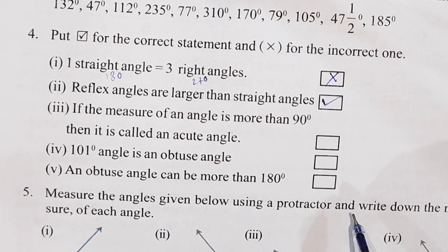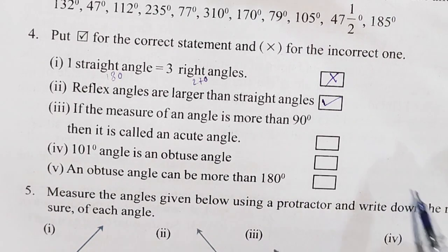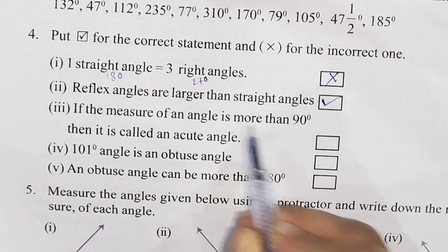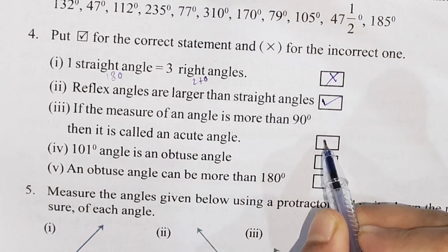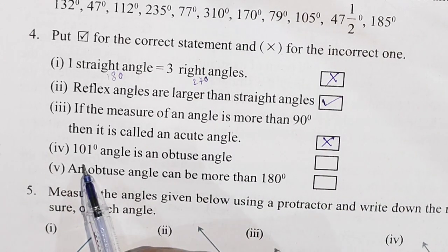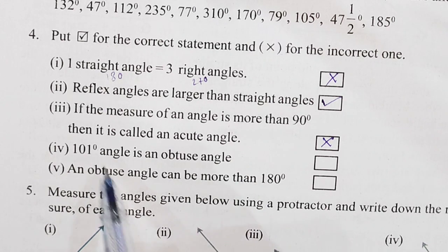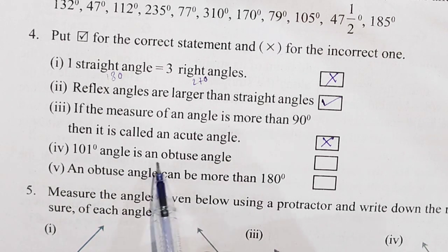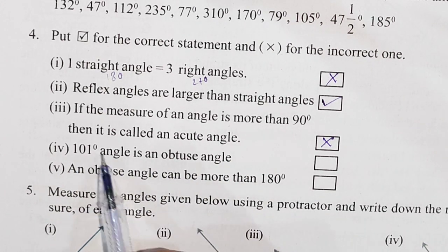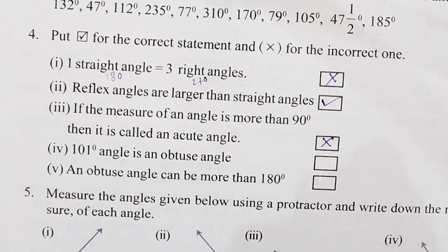If the measure of an angle is more than 90 degrees, it would be more than 90 degrees. A 101-degree angle is an obtuse angle. An obtuse angle is between 90 degrees and 180 degrees.